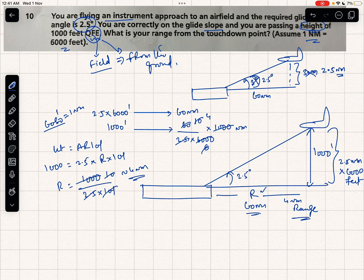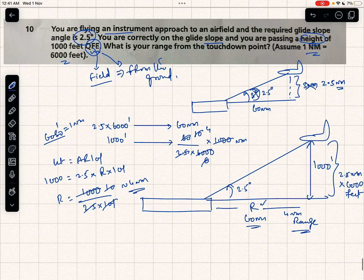That will be the closest answer in your exam. So 4 nautical miles. Hope you understood the 1 in 60 rule and how to solve one question in two or three different ways.